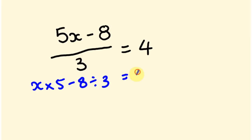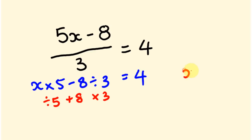Now we do the opposite in reverse: times by 3, add 8, divide by 5. So: 4 × 3 = 12, plus 8 = 20, divided by 5 = 4. So x = 4. Let's substitute to check: 5 × 4 = 20, minus 8 = 12, divided by 3 = 4. No problem!